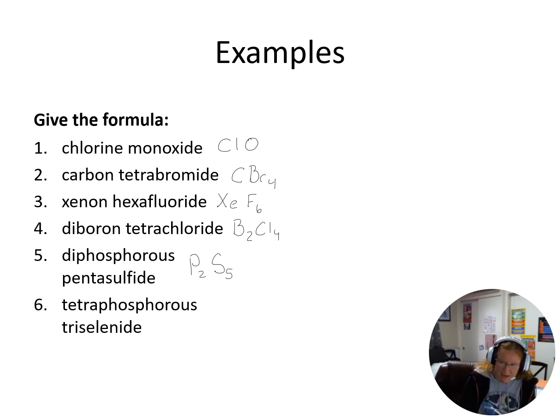Diphosphorus pentasulfide, so P2S5. And then tetraphosphorus triselenide - selenide comes from selenium which is Se - so I get P4Se3.